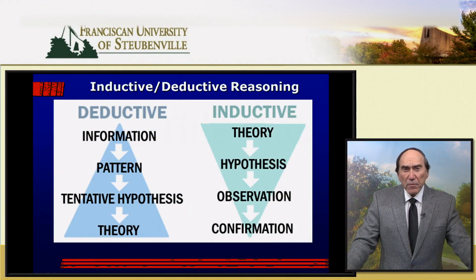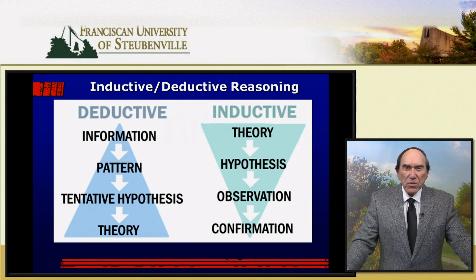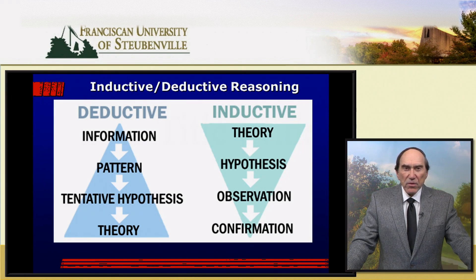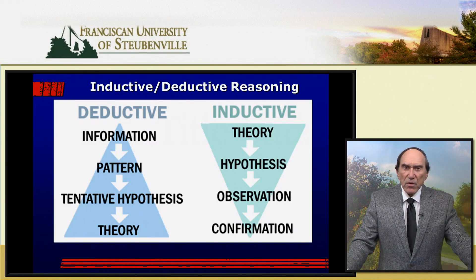Similar to inquiry-based learning, deductive and inductive reasoning employ different research tactics to process information. In deductive reasoning, students look for patterns in provided information and formulate a tentative hypothesis. After testing the hypothesis, they generate a theory based on the patterns. With inductive reasoning, on the other hand, students begin with a theory about provided data, form a hypothesis, make observations, and confirm their findings.